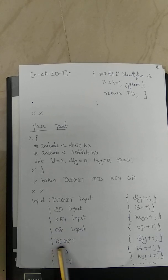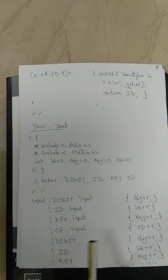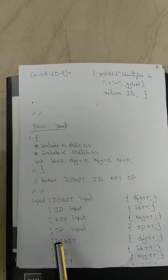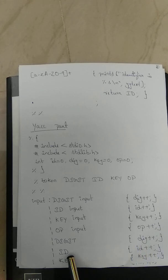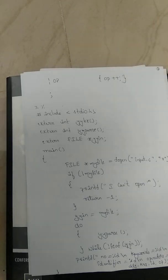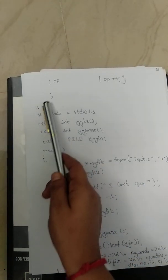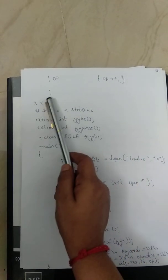Along with input sequences, we also handle cases where only a single token appears in the code — for example, 'sum = 10' has the digit 10 alone. So if only DIGIT is encountered, increment the digit variable; if only ID, increment the id variable; if only KEY, increment the keyword variable; if only OP, increment the operator variable. Terminate each grammar rule with a semicolon.